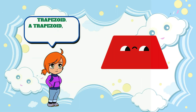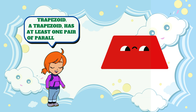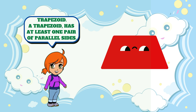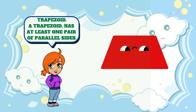Trapezoid. T-R-A-P-E-Z-O-I-D. Trapezoid. A trapezoid has at least one pair of parallel sides.